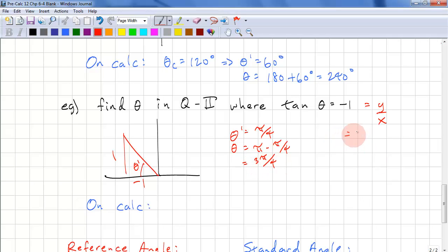In degrees, we have 45. We have 180 minus 45. And we have 135 degrees.